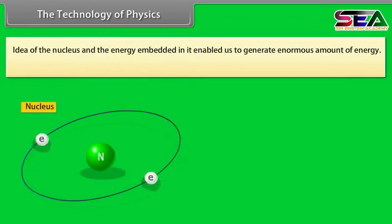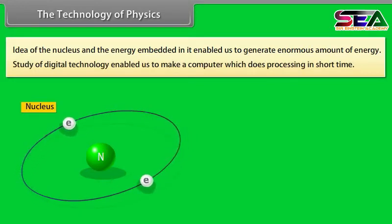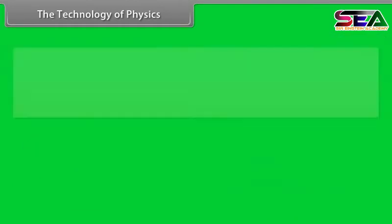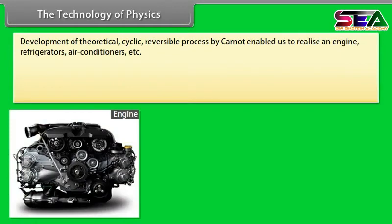The technology of physics. Idea of the nucleus and the energy embedded in it enabled us to generate enormous amount of energy. Study of digital technology enabled us to make a computer which does processing in short time. Development of theoretical cyclic reversible process by Carnot enabled us to realize an engine, refrigerators, air conditioners, etc.